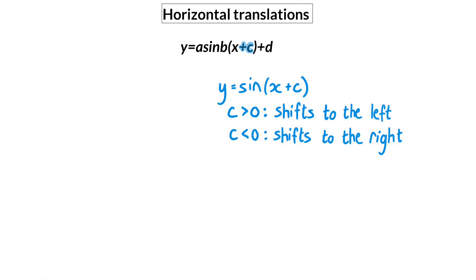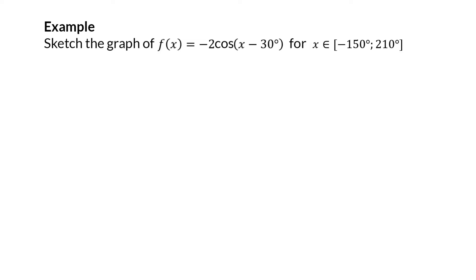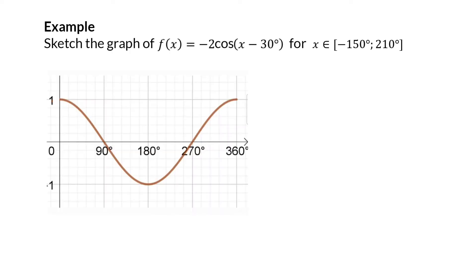Let's have a look at how you will draw such a function. Sketch the graph of f(x) = -2cos(x - 30°) for the interval [-150°, 210°]. In the previous lesson I already explained how important it is to get a basic idea of what the graph will look like before you draw the final graph.